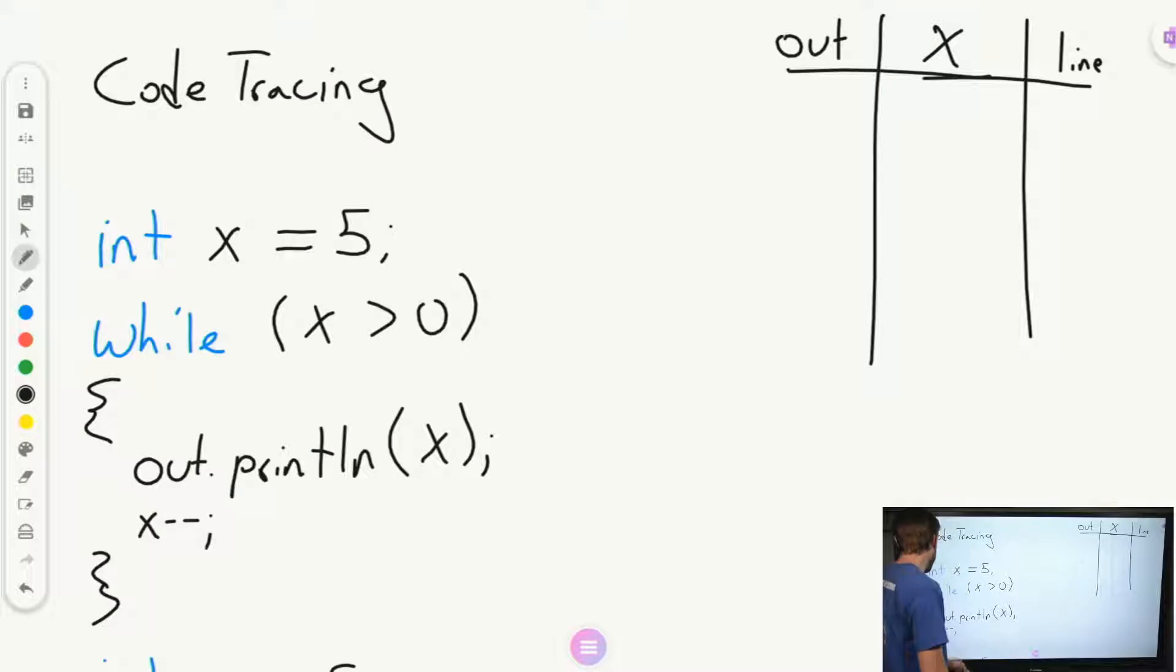Okay, so now let's go ahead and go into it. So we first set our variable x as 5. We go ahead and step into our while loop. This evaluates to true. So we go ahead and print our x, and we get 5. Next, we decrement x by 1. So now x is 4.